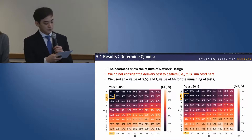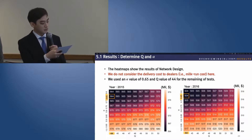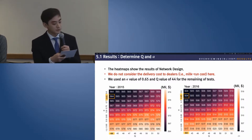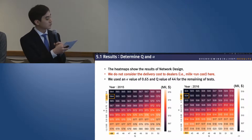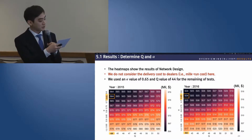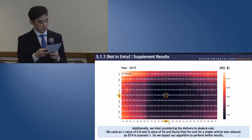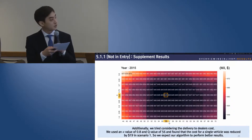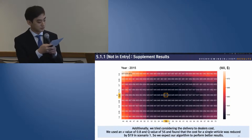This heat map shows the result of network design, not including delivery cost to dealer. The value in the heat map represents the estimated cost by different Q and alpha values. Q is the number of VDCs and alpha controls the trade-off. We used the combination of alpha 0.65 and Q=44, which is expected to yield the lowest cost for the remaining tests. Additionally, we tried considering delivery cost in network design after submitting the report and found that cost was reduced with a different combination of Q and alpha, suggesting our algorithm can perform even better.